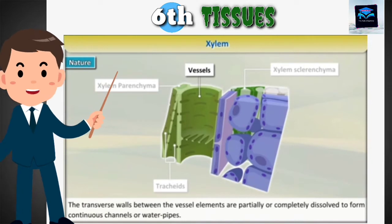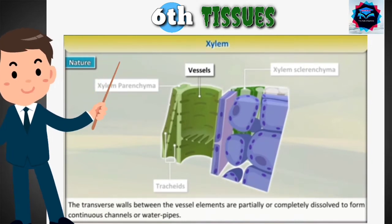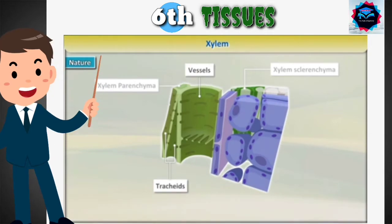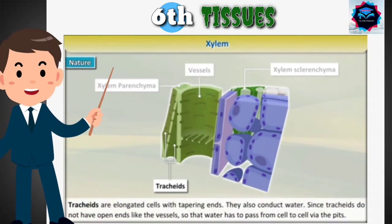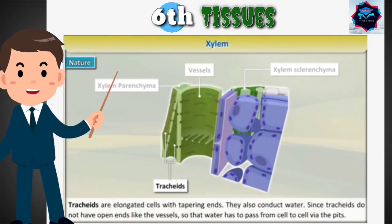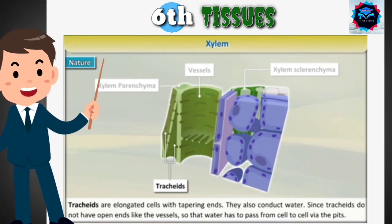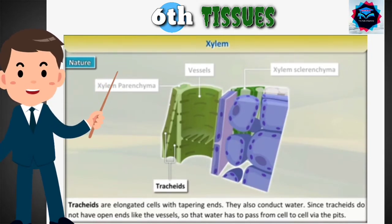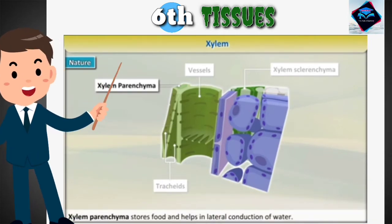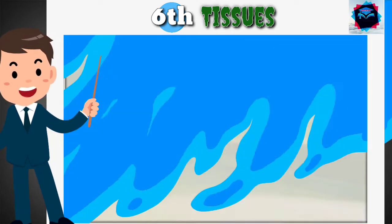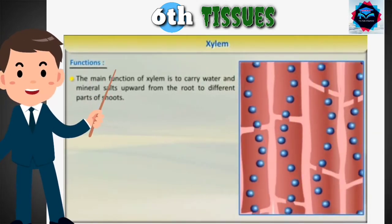partially or completely dissolved to form continuous channels or water pipes. Tracheids are elongated cells with tapering ends; they also conduct water. Since tracheids do not have open ends like vessels, water has to pass from cell to cell via the pits. Xylem parenchyma stores food and helps in lateral conduction of water.